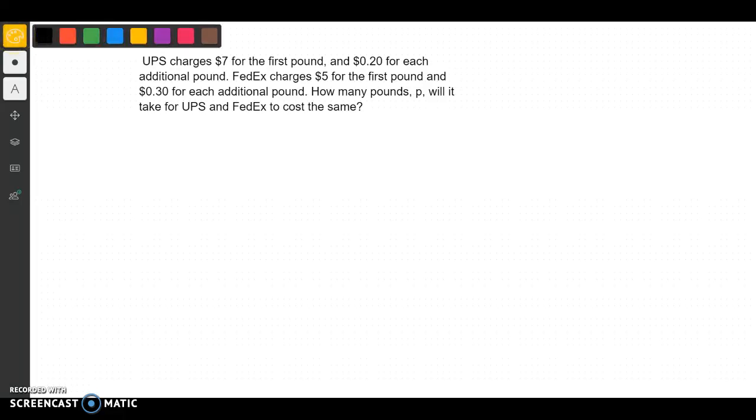Here's our second example of variables on both sides. This has less to do with geometry and more to do with the word problem and trying to understand the word problem.